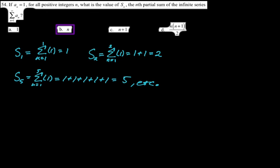Final question: if a_n = 1 for all positive integers, what is S_n, the nth partial sum of the series from 1 to infinity of a_n? S_1 = 1, S_2 = 1+1 = 2, S_5 = 5. Every time you just get the upper bound, so S_n = N. That ends this video — the previous and future parts can be found in the playlist. Good luck!